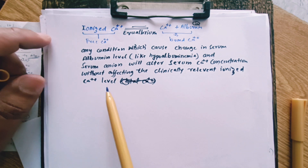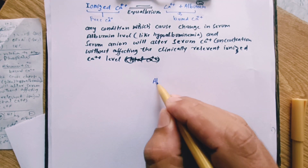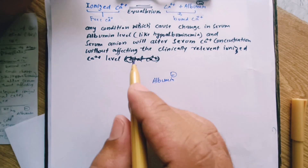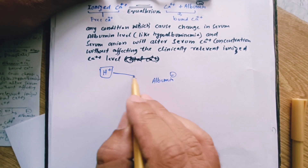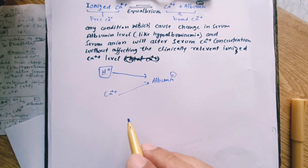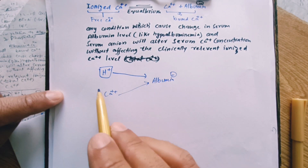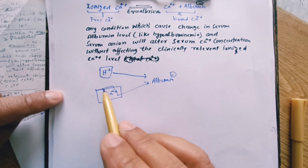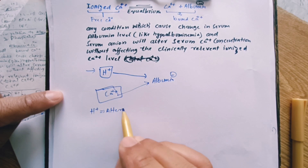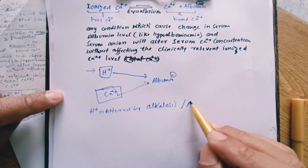Albumin has a negative charge, so protons — which have a positive charge — are trying to bind with albumin, and calcium — which also has a positive charge — is trying to bind with albumin. When we disturb the value of albumin or proton, it will disturb the value of calcium. Proton levels are altered by alkalosis or acidosis.